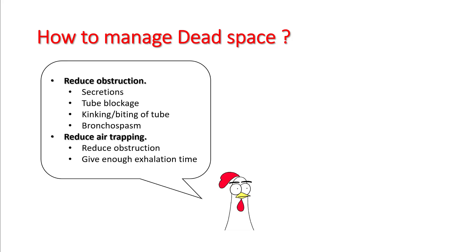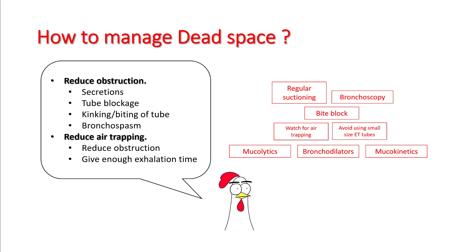Try to reduce obstruction. Common obstructive problems you see in clinical practice include secretions, tube blockage, kinking or biting of the tube, or bronchospasm. To manage these patients, perform regular suctioning; use bronchoscopy if needed to clear secretions. In patients with collapsed lungs, you can use a bite block. Avoid using small-size endotracheal tubes, and use bronchodilators and mucolytics or mucokinetics as indicated.